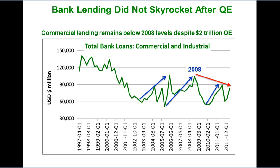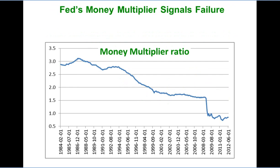That's not all. This chart shows you the Fed's money multiplier from 1984 till present. The money multiplier is the ratio of M1 to the monetary base — in other words, it shows how fast credit is being created from the monetary base.